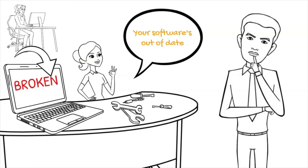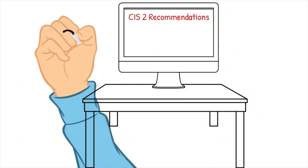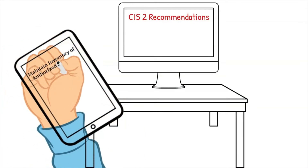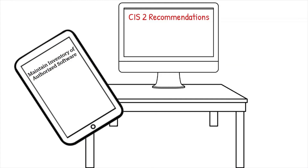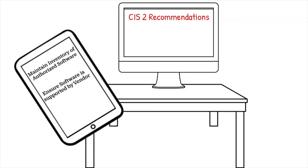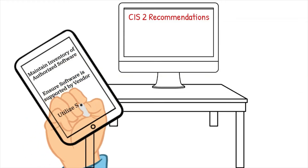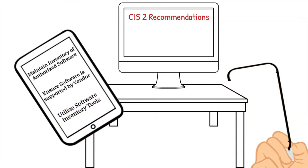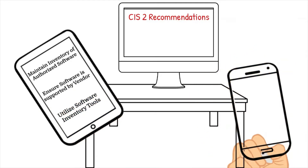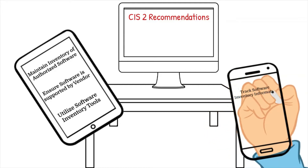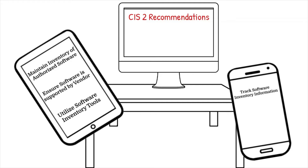Cybercriminals prey on vulnerable versions of software that could be exploited. To stop this from happening, CIS Control 2 recommends you maintain an up-to-date list of all authorized software required in the enterprise, ensure that software applications and operating systems are currently supported by the vendor, and use software inventory tools throughout the organization to automate documentation of all software on business systems. The software inventory system should track the name, version, publisher, and installation date for all software and operating systems.